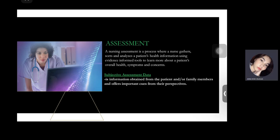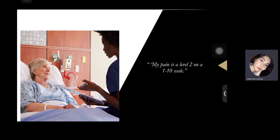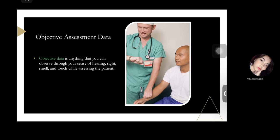For example, subjective data would be: the patient reports, 'My pain is a level 2 on a 1 to 10 scale.' Objective data is anything you can observe through the senses of hearing, sight, smell, and touch while assessing the patient. For example, the nurse assesses the patient's radial pulse — the patient's pulse is 58 to 60 and regular. The nurse observes the patient's skin and finds it warm and dry because she touched the patient.